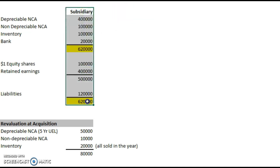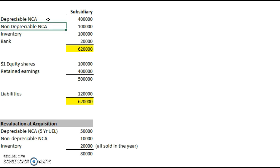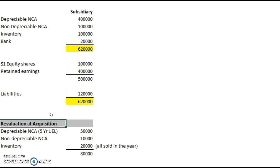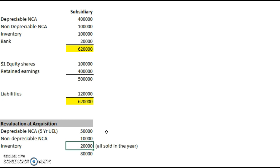Here is a simple balance sheet for a subsidiary — we're not looking at the parent at this stage. We have some depreciable and non-depreciable non-current assets, standard inventory and bank. The equity section has equity shares, retained earnings, and then liabilities. Below we have our revaluation schedule: depreciable assets revalued up by plus 50, non-depreciable at 10,000, and inventory at 20,000. These were all sold within the year.